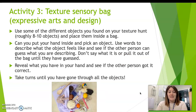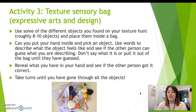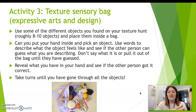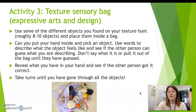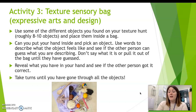Activity number three is a texture sensory bag. So use some of the different objects that you found on your texture hunt. You'll need roughly around eight to ten objects, so choose ones that will fit inside a bag and then place them inside a bag. Then put your hand inside and pick an object. Use words to describe what the object feels like and see if the other person can guess what you are describing. Don't say what it is or pull it out of the bag until the other person has guessed. It might be your grown-up that's guessing, or your brother or sister.